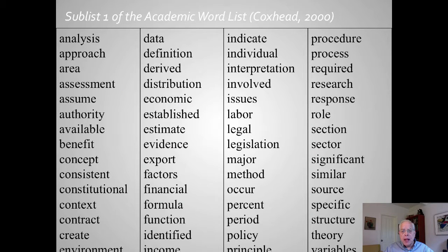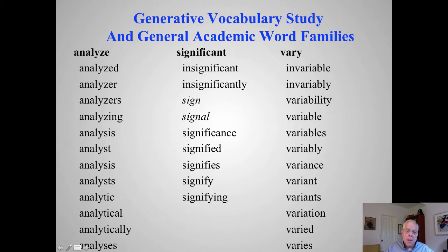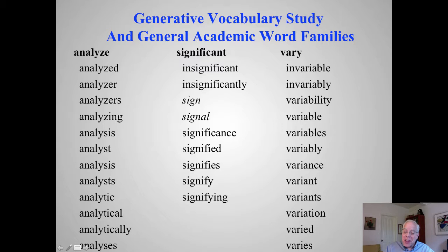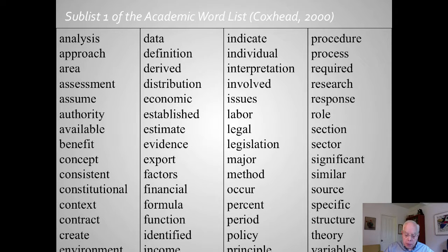Let's look at general academic vocabulary. This is part of the Coxhead list. You can see these words exist across all textbooks. For example, 'legislation' — you don't see that in science as much, but you need to know what it means across disciplines. So when teaching the word 'analyze,' think of related words: analytic, analyzer. Or if working on a word in the third column, look at its related words. This helps students' learning.